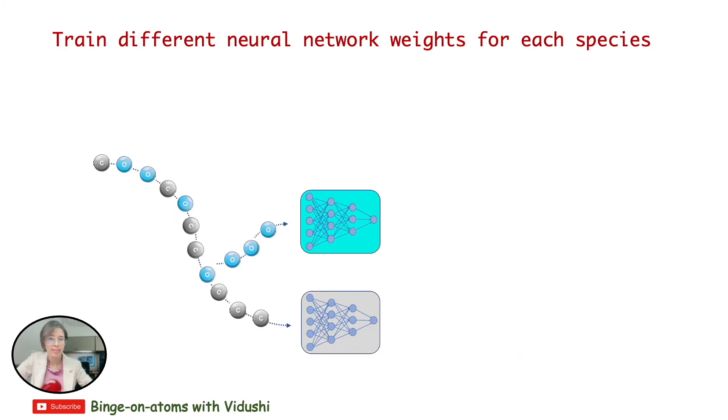Another most popular approach is used when the neural network is calculating atomic energies and forces. Here we train different neural network weights for each species, so for a bi-component system as in here, there are two sets of neural network weights specific for each atom species.